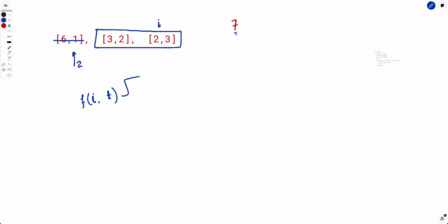If i is pointing to the third type with two questions worth three points each, we have three choices: solve zero, one, or two questions. If we solve nothing, we recurse with the same target from index i+1. If we solve one question, we recurse with target t minus three from i+1. If we solve two questions, we recurse with target t minus six from i+1. The final answer is the sum of all these three choices.